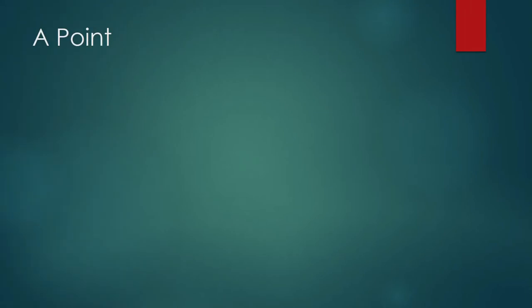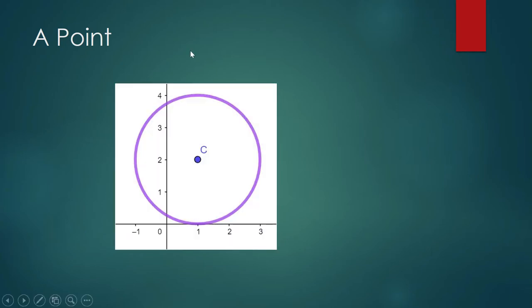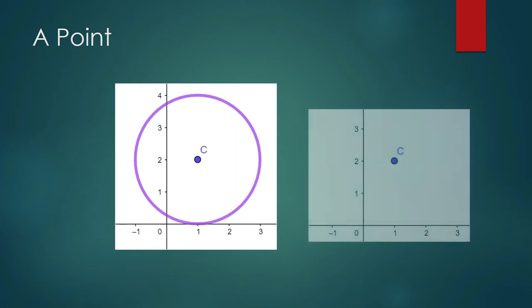So what are the degenerate cases for our conic sections? A point is a degenerate case. You can look at a point as the degenerate case of a circle or an ellipse. For example, this is our ordinary regular circle with center C and radius 2. What if the circle has a center but has no radius? So it becomes just a point.